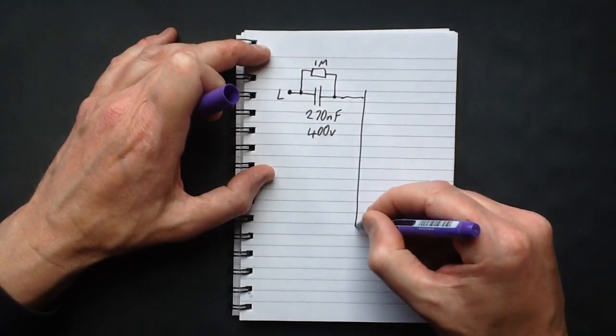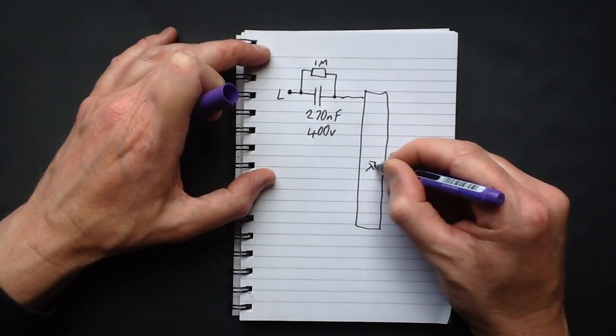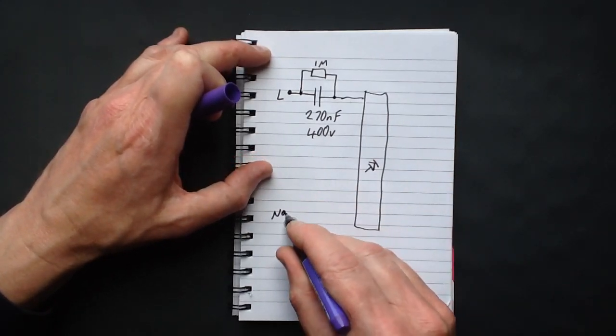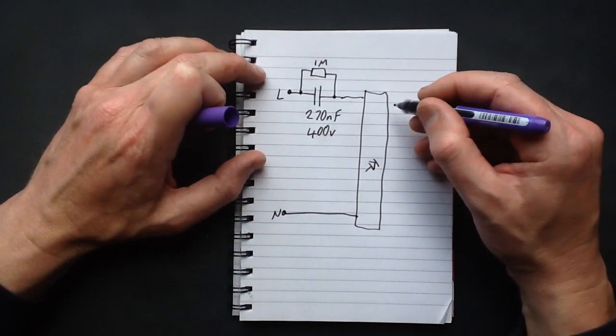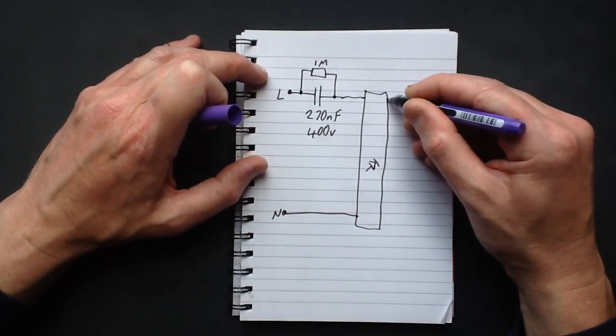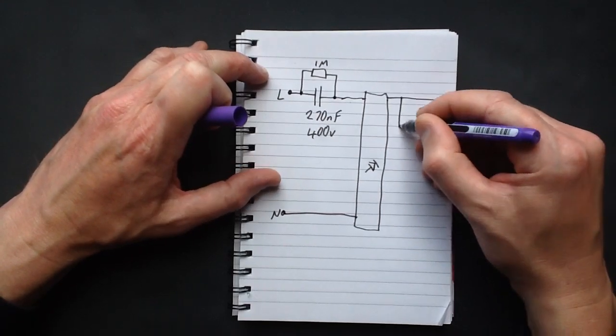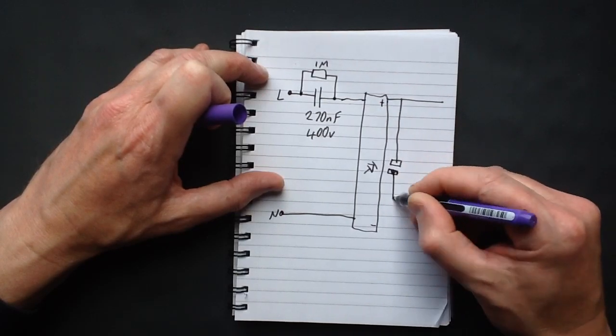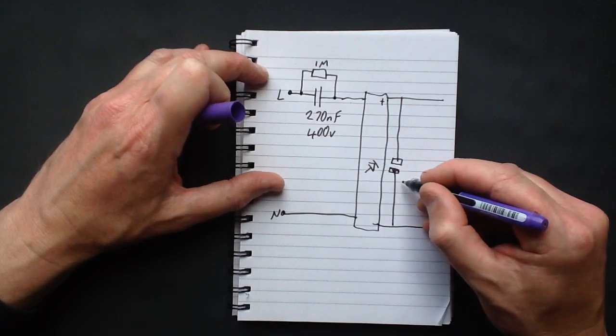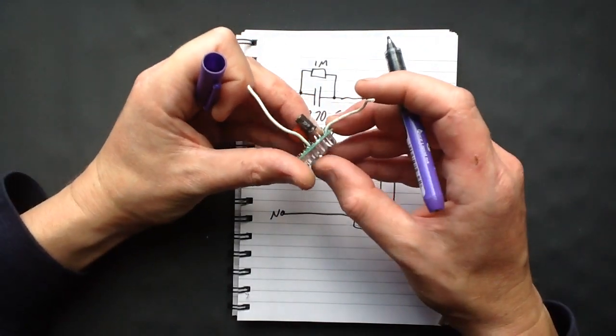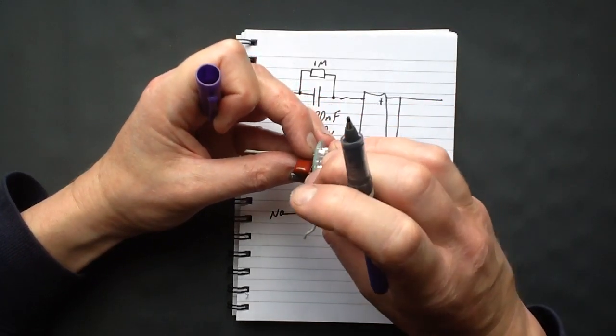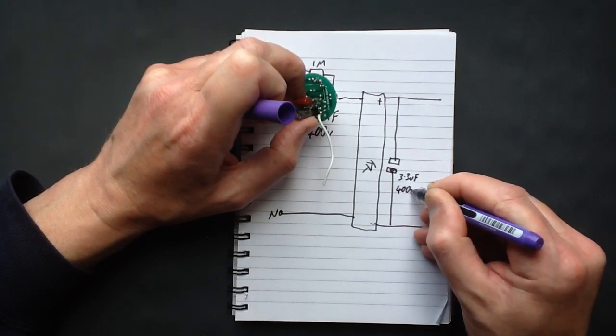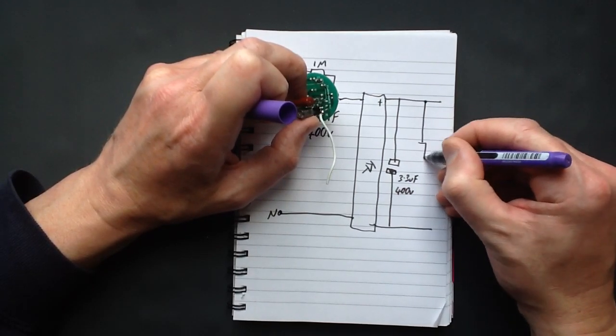That goes into a bridge rectifier, I'll draw it quite big here. The neutral goes straight into the bridge rectifier, and the output has the electrolytic capacitor across it, plus minus, which is rated 3.3 microfarad at 400 volt.